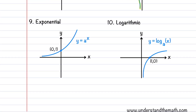Our ninth and tenth functions are related to each other: the exponential function and the logarithmic function. These two functions are inverses of each other. The exponential function is defined by the equation y = aˣ, and the logarithmic function is defined by the equation y = log base a of x.